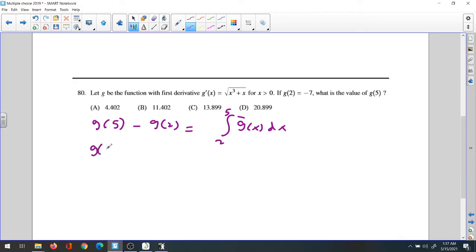So G(5) equals G(2) plus integration of G'(x) from 2 to 5. Now G(2), as you know, is given as negative 7, plus we need the integration of the function from 2 to 5.